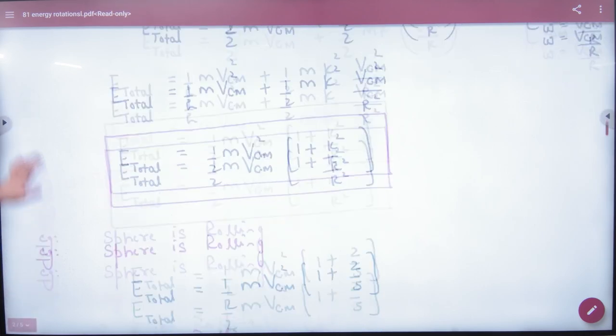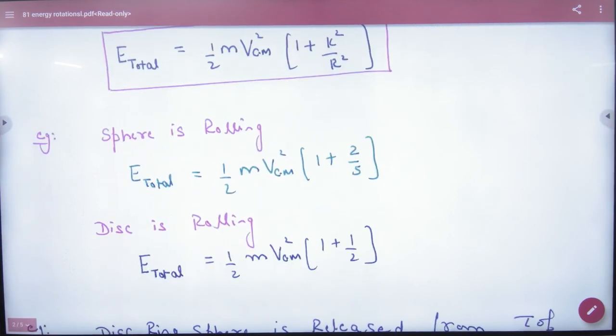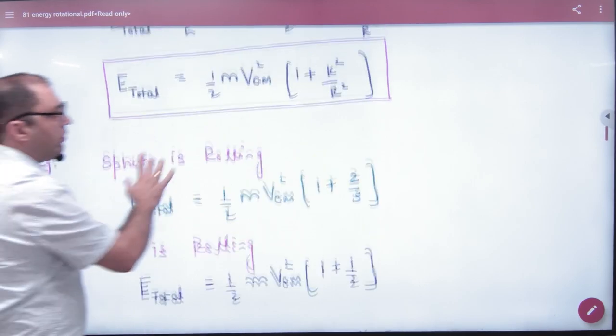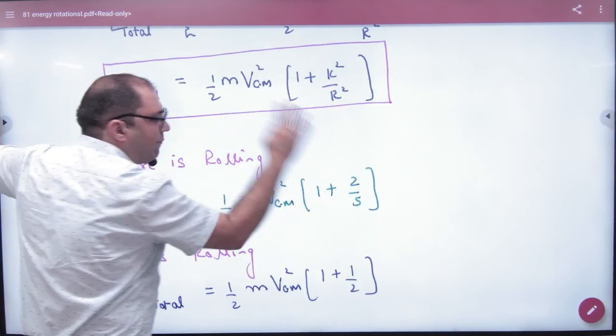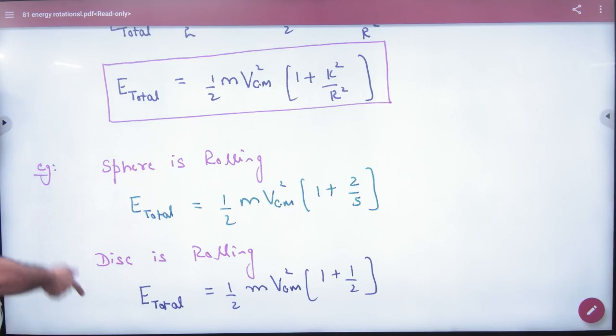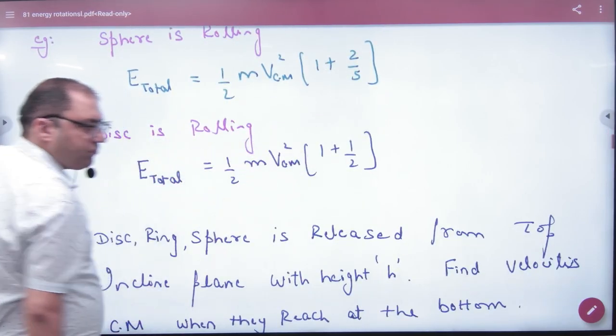So if something is given in numerical, that if a solid sphere is rolling, what will be the value of k squared by r squared? 2 by 5. If it is a disk, then 1 by 2.